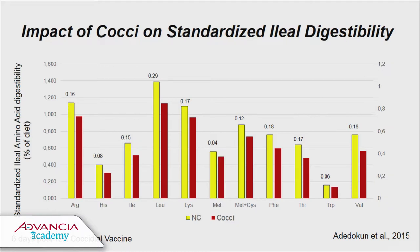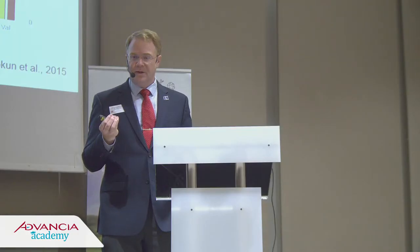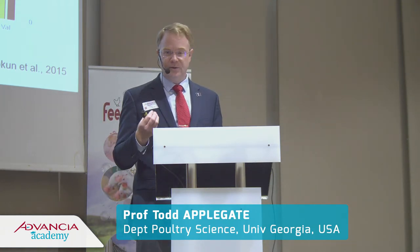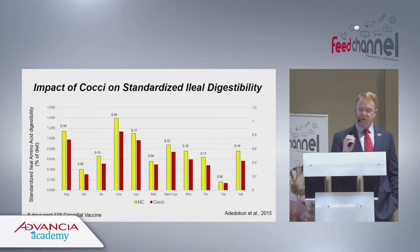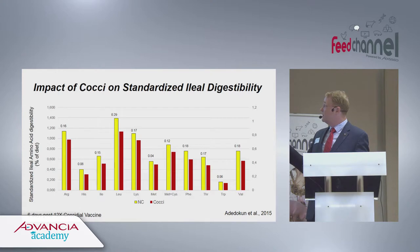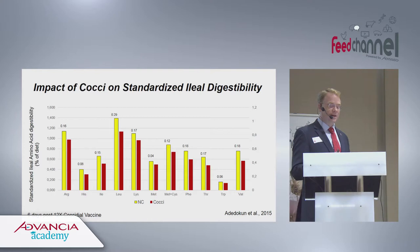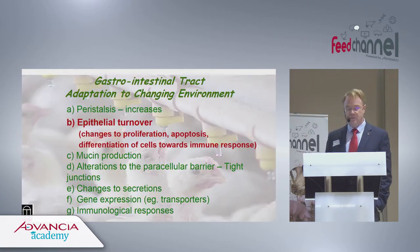Dr. Kidd will talk later this morning about how some of those essential amino acids in particular are responding. One thing critical to understand — if we're thinking about the ideal amino acid concept, that ideal protein may change as we're going forward to respond to some of these challenges. We know that the acute phase proteins, and their profile, change during the course of an innate immune response and in response to challenges and invasions within the digestive tract. As you look at some of those that are more rate-limiting, you can see that total changes from a digestible standpoint change quite dramatically.